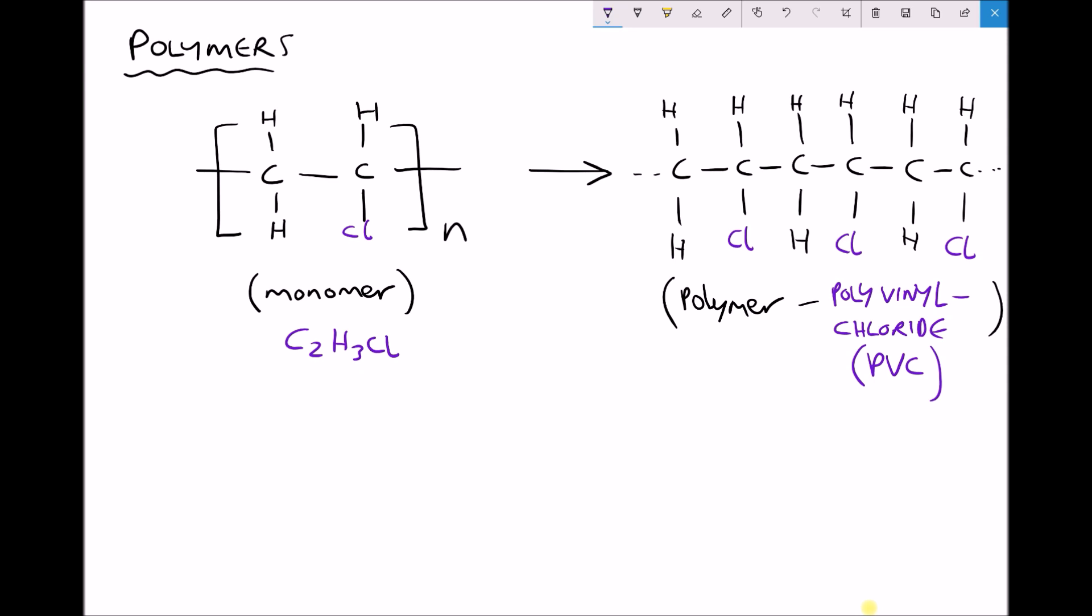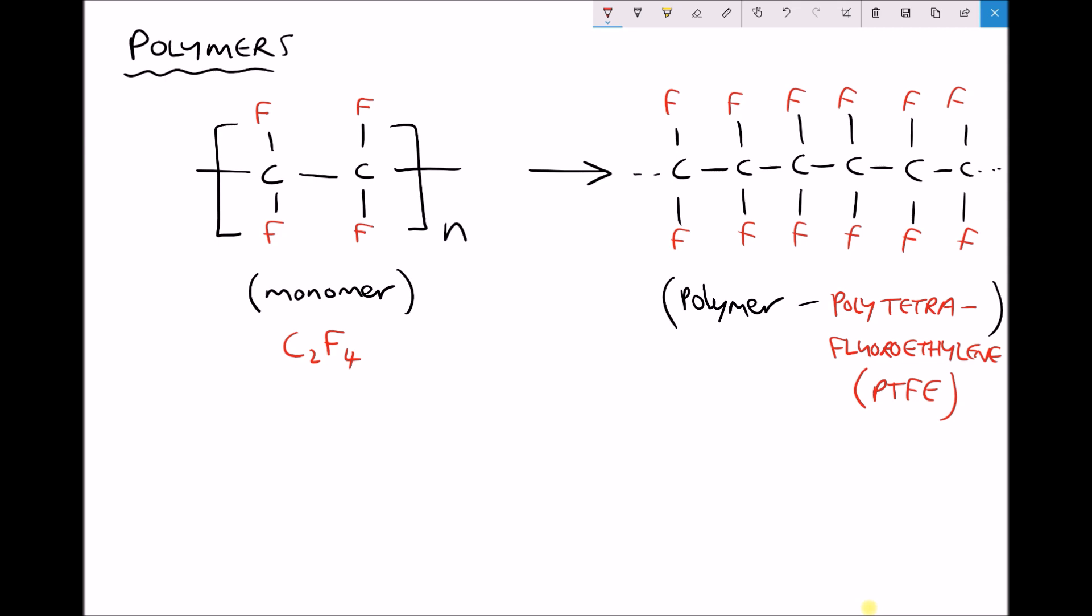Let's look at a slightly different variation. This time on the monomer we see that all of the hydrogens have been replaced by fluorine atoms. So we have the formula C2F4.